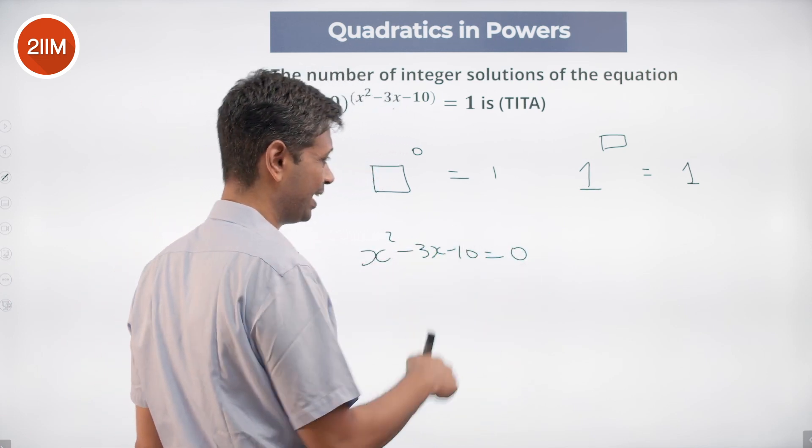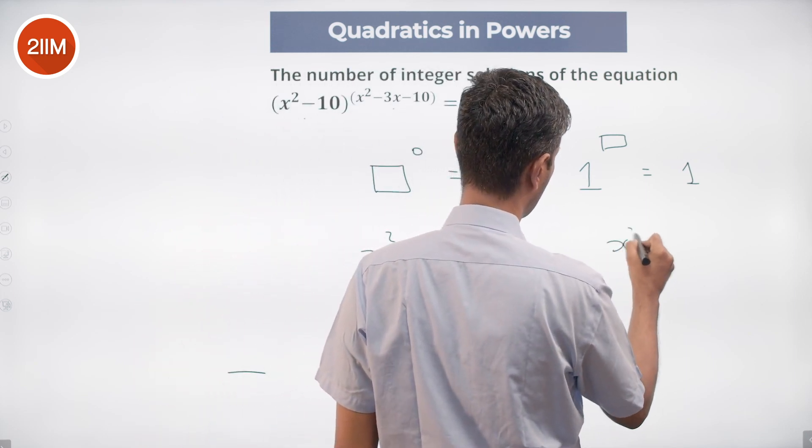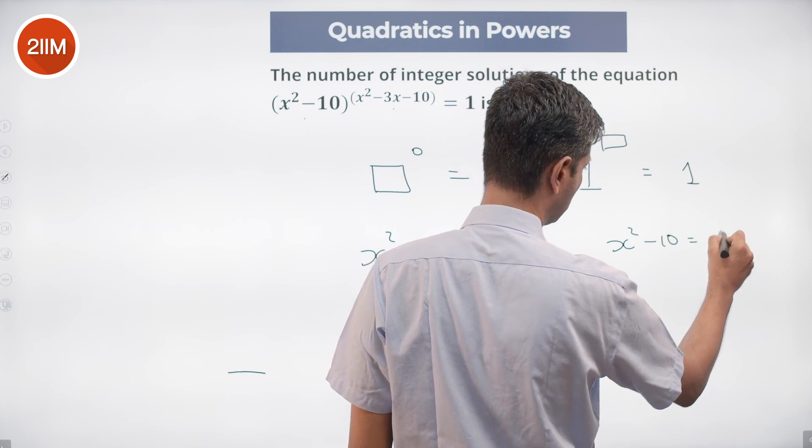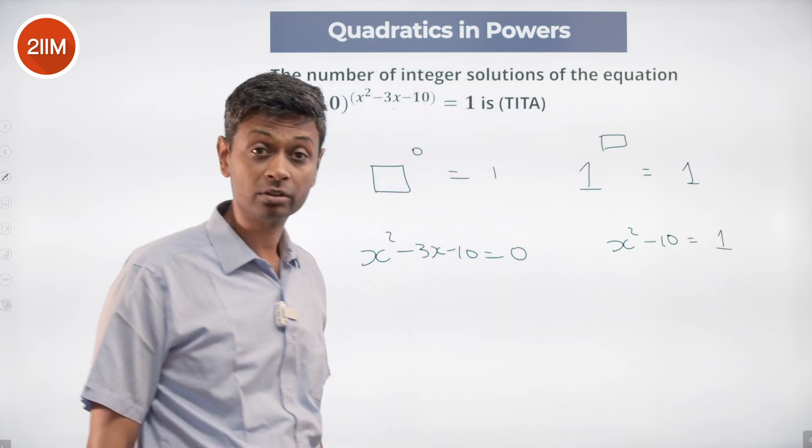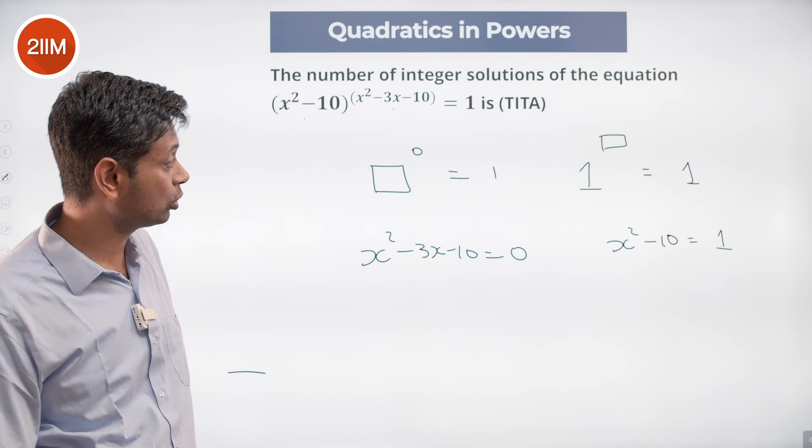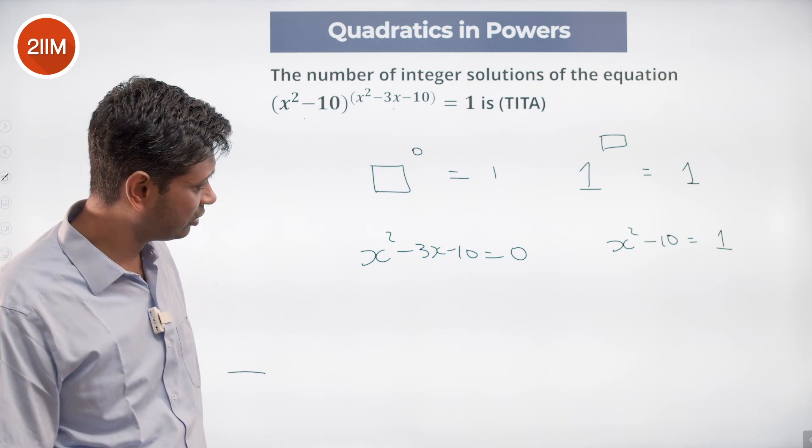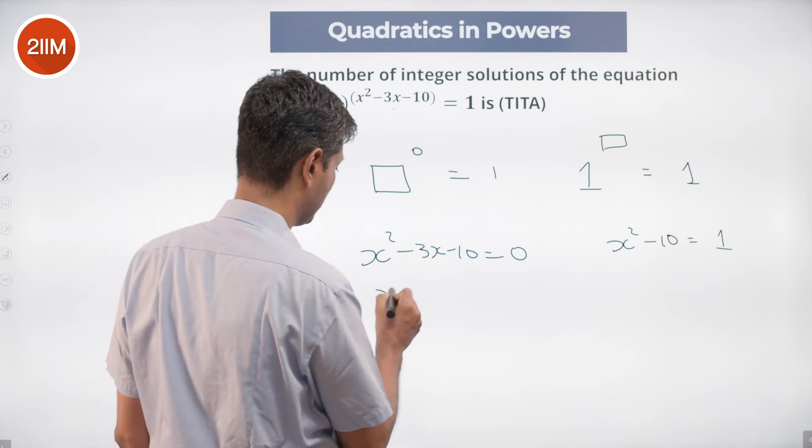And then think about simplifying this. Nice. So x² - 3x - 10 = 0, or (x - 5)(x + 2) = 0.